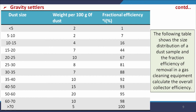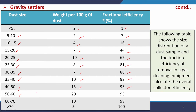A numerical problem: the following table shows the size distribution of a dust sample and the fractional efficiency of removal in a gas cleaning equipment; calculate the overall collector efficiency. The table gives: dust size <5 μm: 2g, efficiency 1%; 5–10: 2g, 7%; 10–15: 4g, 16%; 15–20: 7g, 44%; 20–25: 10g, 67%; 25–30: 8g, 81%; 30–35: 7g, 88%; 35–40: 10g, 92%; 40–50: 15g, 93%; 50–60: 20g, 95%; 60–75: 10g, 98%; >75: 5g, 100%.